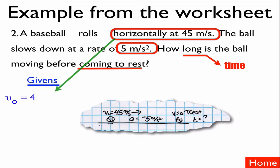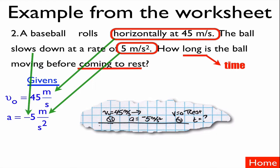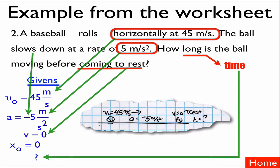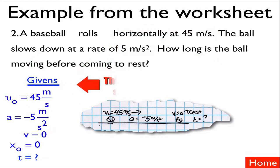So my givens: horizontally, initial velocity is the start of the story at 45 meters per second. It's changing velocity at 5 meters per second squared, and since it's slowing down, that's minus 5 meters per second squared. It comes to a rest, so final velocity is zero. x-naught we make equal to zero — that's like the free space in bingo, you can always assume that for our problems. And finally, we're looking for the time — how long the ball is moving. This is what your final list of givens would look like.